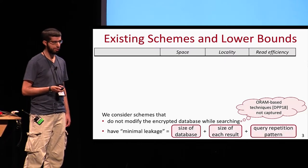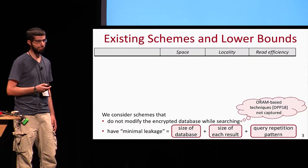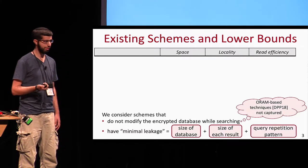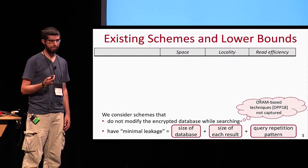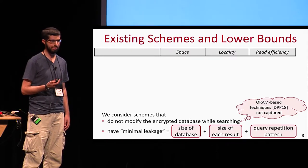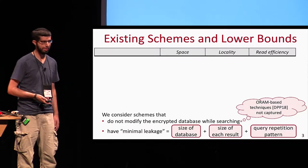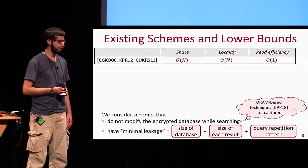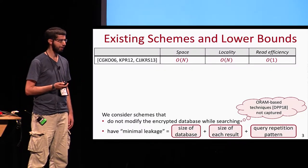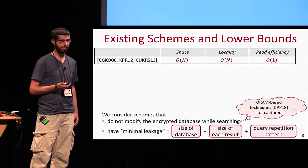We consider schemes that have what is called minimal leakage, which means they leak only the size of the database, the size of the result of each query, and the query repetition pattern — what Eric called the equality pattern, that is, which queries are repeated. First, there are various schemes that did not take locality into account, so they have optimal space and read efficiency. However, the locality is as bad as O(N).